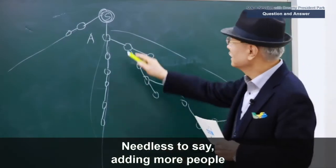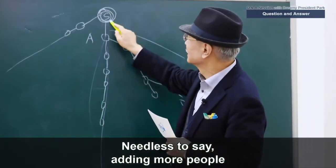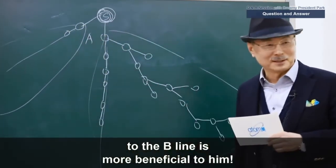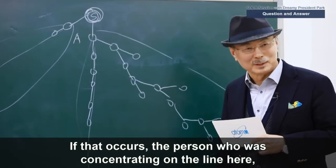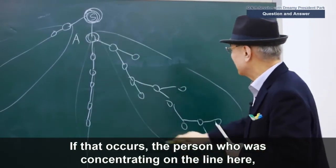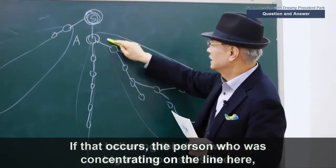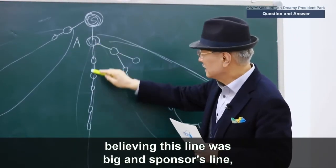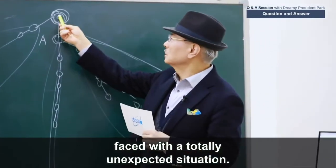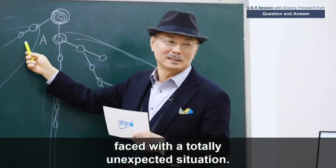Needless to say, adding more people to the B-line is more beneficial to him. If that occurs, the person who was concentrating on the line here, believing this line was big, and now the sponsor's line is faced with a totally unexpected situation.